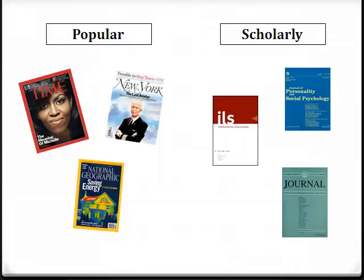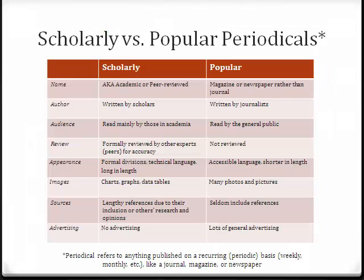The other important distinction in academic research is between scholarly and popular periodicals. These are pretty easy to tell apart when looking at the physical publications, but it's important to be able to tell them apart in databases, where you probably won't be able to see the cover to clue you in. Anything published on a periodic basis, whether weekly, monthly, or otherwise, is referred to as a periodical, to distinguish them from books.